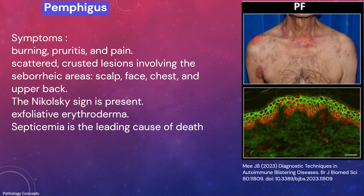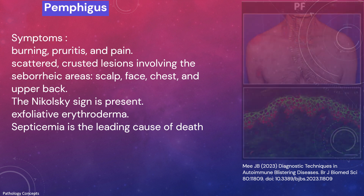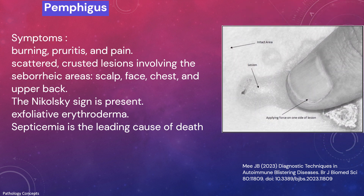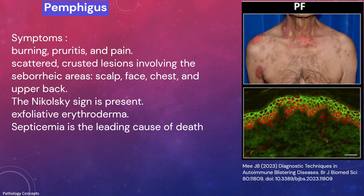Symptoms include burning, pruritus, and pain with scattered and crusted lesions involving seborrheic areas such as scalp and face. The Nikolski sign is present. The disease may stay localized for years or may rapidly progress to generalized involvement resulting in exfoliative erythroderma, associated with high morbidity, mortality, and potential life-threatening complications. Septicemia is a leading cause of death in pemphigus vulgaris.